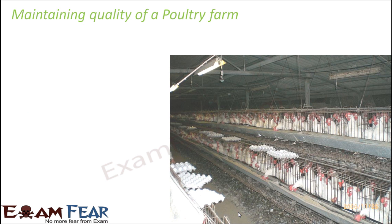Let us see how we can maintain the quality of a poultry farm. Here in the picture you can actually see how a poultry farm looks like — all the birds have been kept inside cages, and you can also see the trays carrying the eggs laid by these birds. As soon as the eggs are laid, they should be taken out and sold for human consumption. The way they are stored, it is very important to maintain quite a few things.